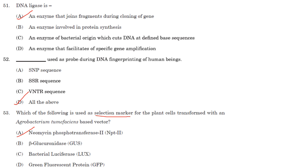Which is used as a probe during DNA fingerprinting of human beings? All of the above can be used as probes — SNPs, SSR, and VNTR sequences.